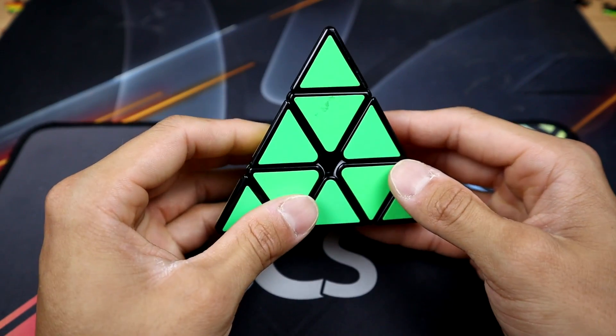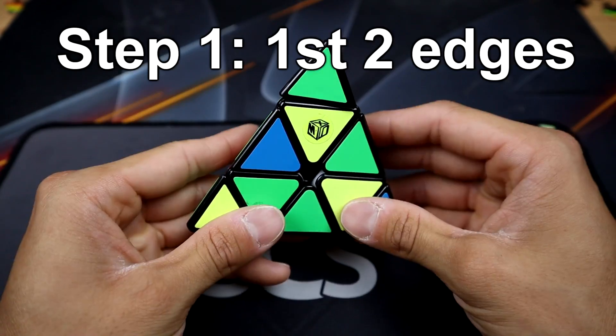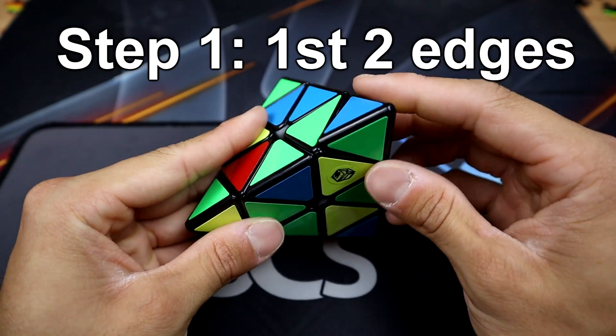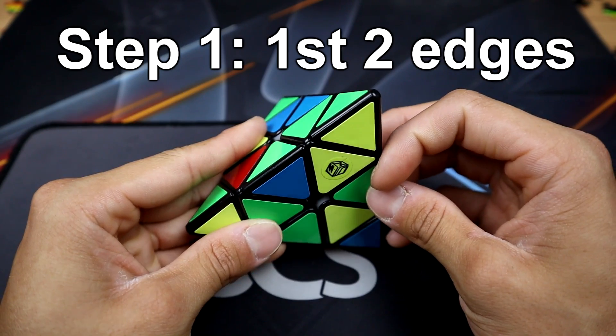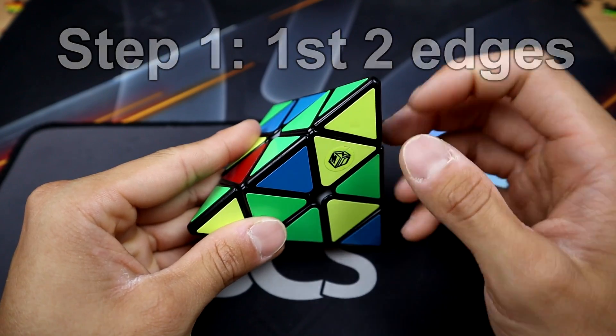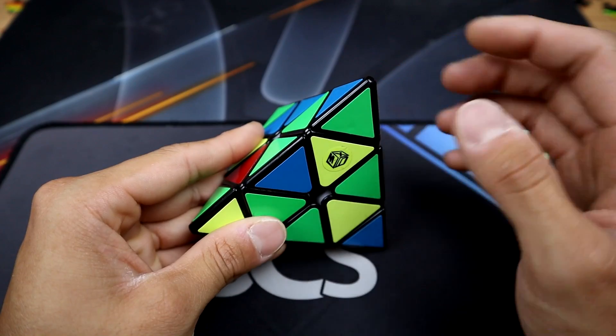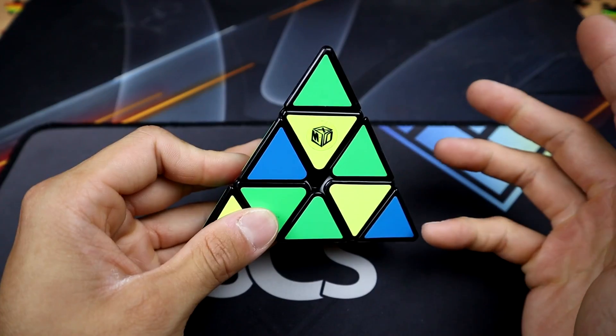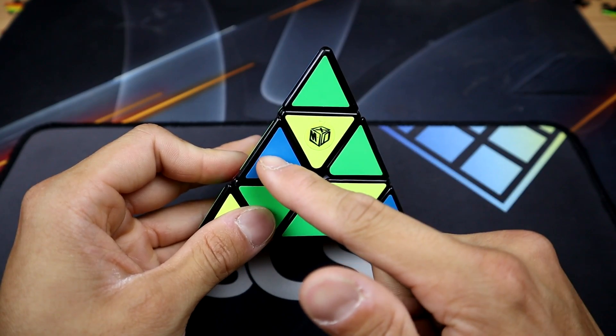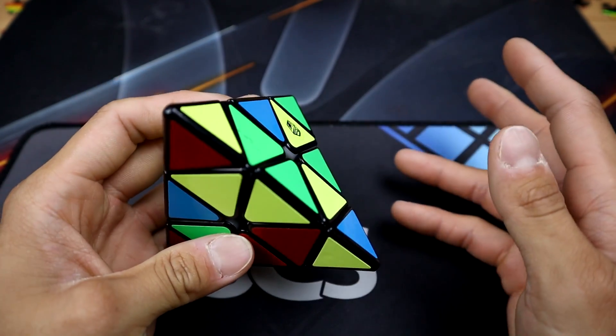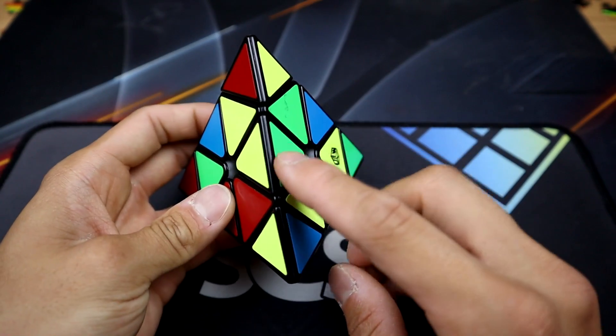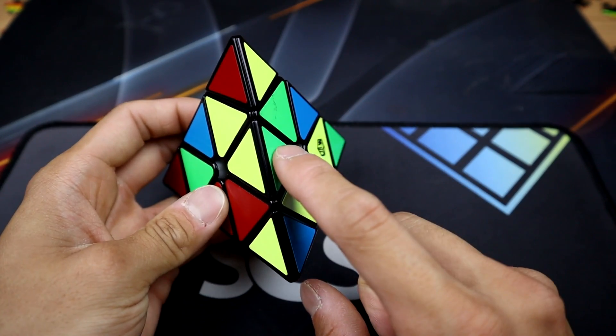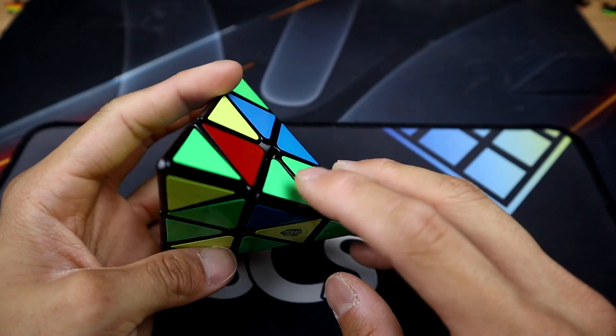Now let's go ahead and mix this up. So with the tip, you can solve the tip whenever you'd like in the process. And I'll let you know when I usually solve the tips when I solve this pyramid using the keyhole method. Now you do want to be color neutral since there are edges that can be solved wherever they are. Like this one, the green and yellow edge is already solved.